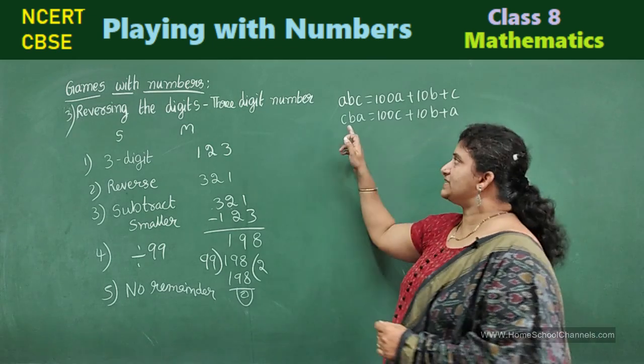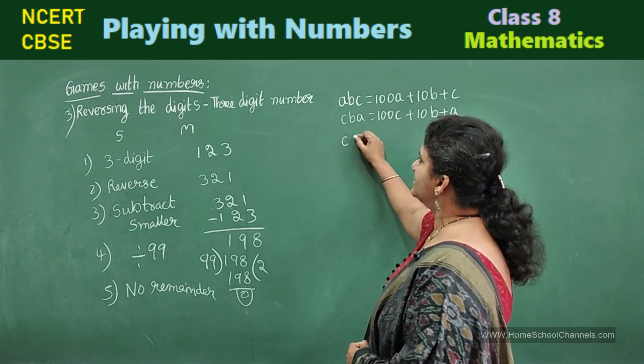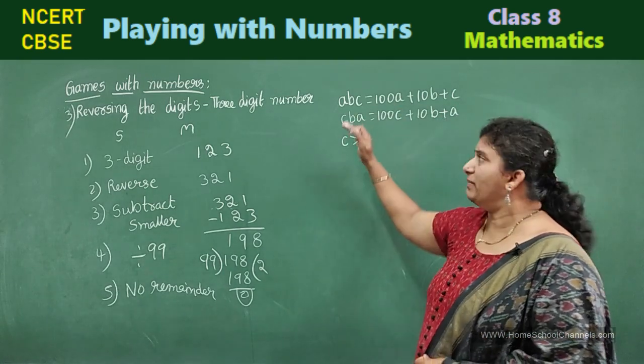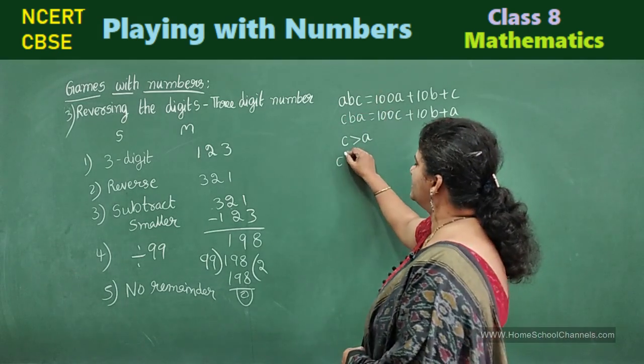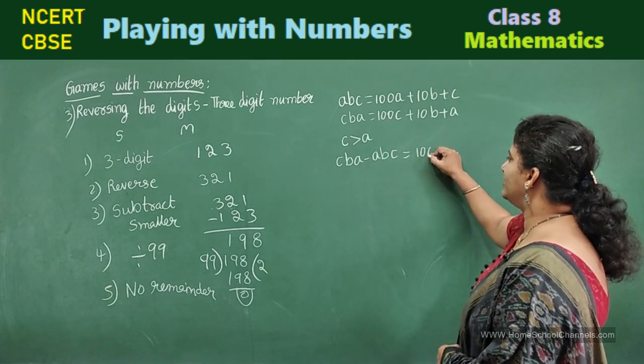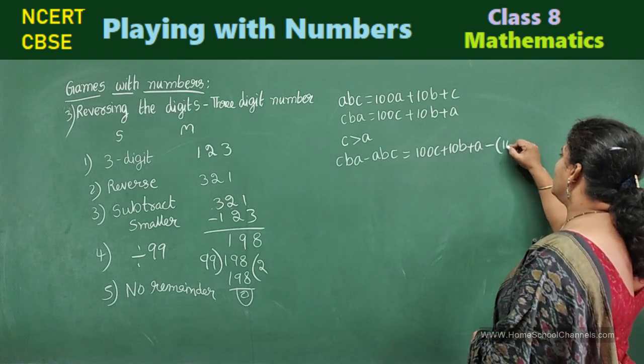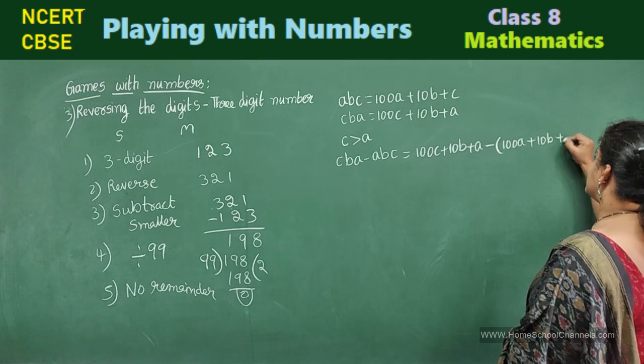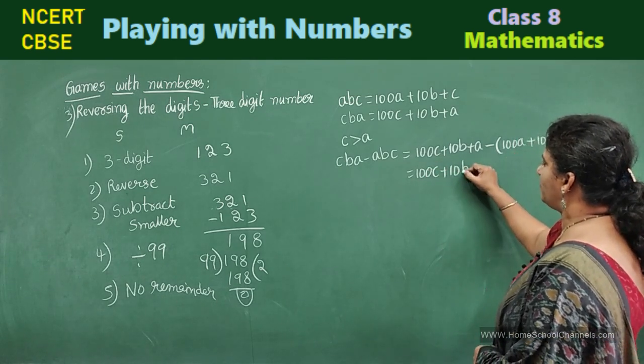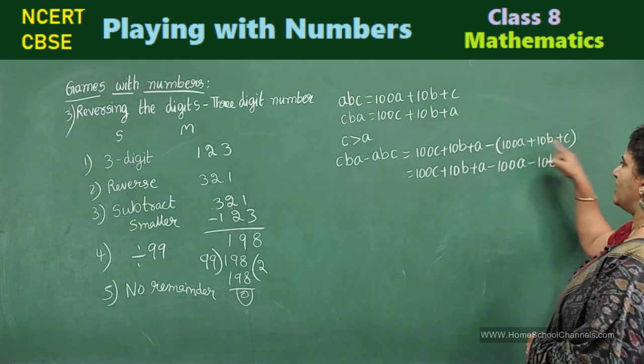Now, we can take if C is greater than A. Before we have solved, A is greater than C. Now, let me write C is greater than A. How can I do this three digit number minus this we are going to do? That is CBA minus ABC. CBA. 100C plus 10B plus A minus. Put in brackets. 100A plus 10B plus C.